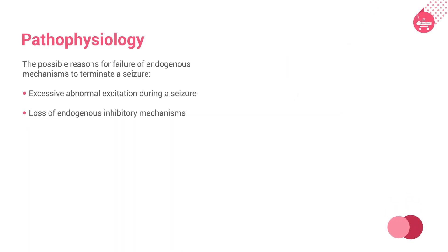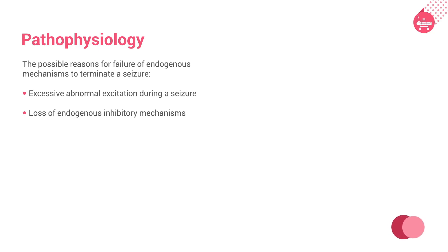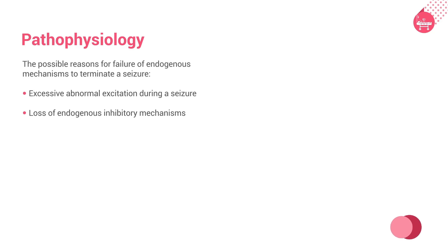The pathophysiology of SE is poorly understood. However, animal studies have shown that failure of endogenous mechanisms to terminate a seizure is the fundamental principle involved. The possible reasons for this failure are: 1. Excessive abnormal excitation during a seizure. 2. Loss of endogenous inhibitory mechanisms. These changes allow a single seizure to transform into SE and contribute to its self-perpetuating nature and far more resistance of the disorder.